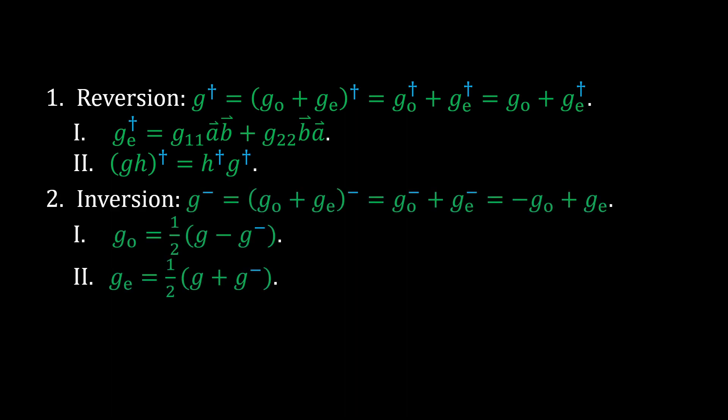The next conjugation is called inversion, denoted by a raised minus sign. It negates the sign of each nilpotent vector, meaning that it does not conjugate the even part of a geometric number, but it fully negates the odd part. Note the decompositions of the even and odd parts of G.